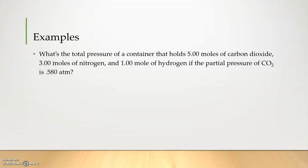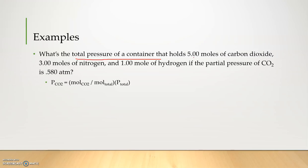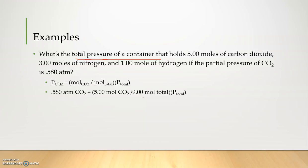So one more example. What's the total pressure of a container that holds five moles of carbon dioxide, three moles of nitrogen, and one mole of hydrogen, if the partial pressure of carbon dioxide is 0.580 atm? We use the same equation. We're looking for the total pressure of the container, and we know it holds five moles of carbon dioxide, three moles of nitrogen, and one mole of hydrogen. So we have 0.580 atm of carbon dioxide equals five moles of carbon dioxide divided by the total moles in the system.